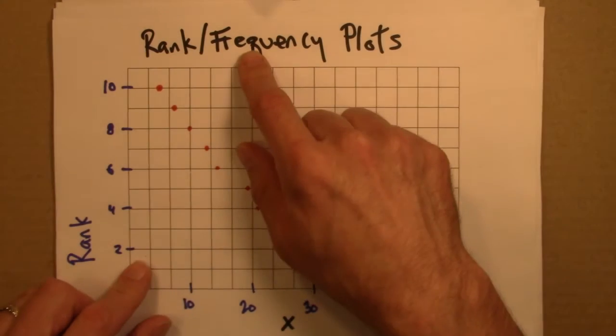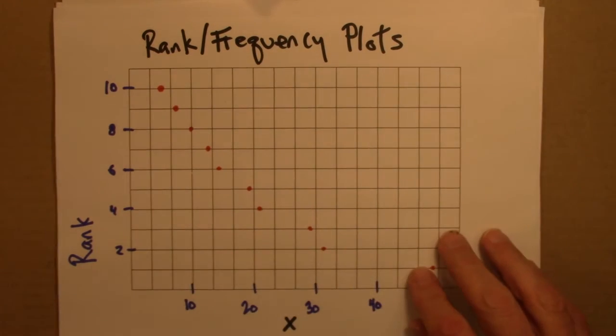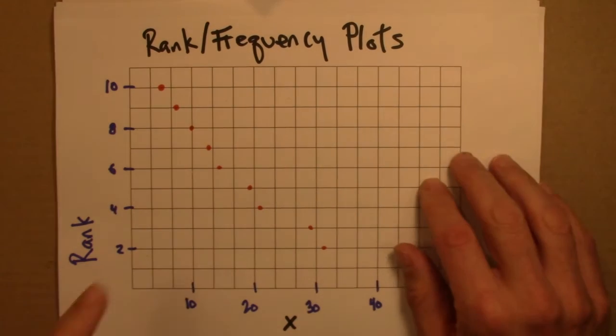Whatever X could be. It could be the population of cities, sizes of earthquakes, who knows. It doesn't have to be a frequency. But nevertheless, these are known as Rank Frequency Plots. So that's one remark.